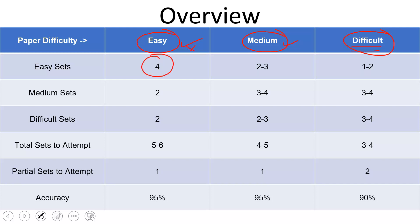Now easy section, there would be four easy sets, two medium sets and two difficult sets. Total sets to attempt, you can see five to six sets and partial sets to attempt. Now what do I mean by partial sets? You don't have to do four questions in a set. Let's say, one difficult set has one question easy. So we have to do that. Or another set has one or two questions easy. Now for an easy paper, accuracy should be 95%.